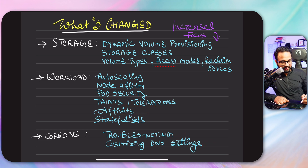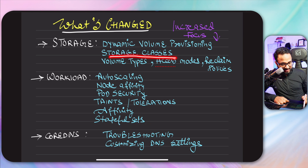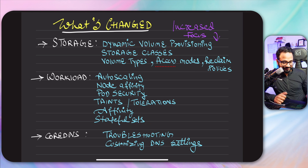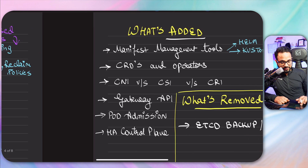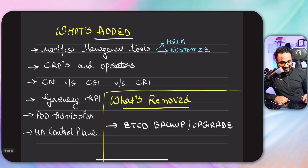What's not added yet: stateful sets, storage classes, and dynamic volume provisioning. So let's see what they have added new.